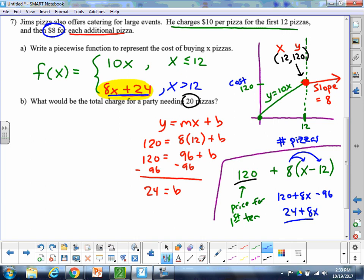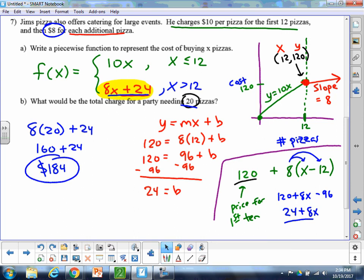Either way, you can use the y-intercept method or you can just use, like, the kind of just talk through the word problem method. But to answer Part B, we need to use that part of the equation, right? So for 20 pizzas, I could just say it's 8 times 20 plus 24. Would give me 160 plus 24, so $184. That would be our answer for Part B. So you decide which method you like, but just kind of try and piece it together. And that is that.